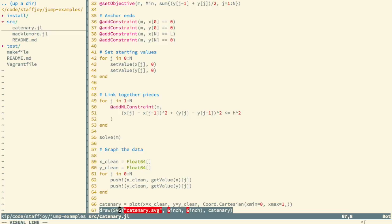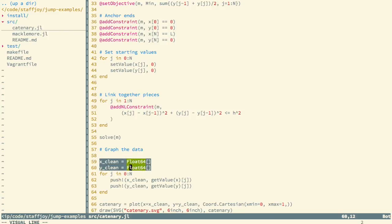Down here you can use getValue to retrieve the value for an optimized model. We're going through for every single x-y coordinate and pulling the value. The data structure that it comes out as is a little weird, so I push it into a float array.